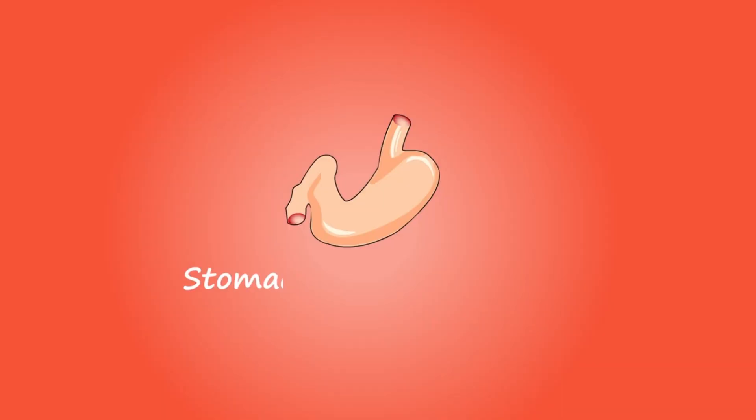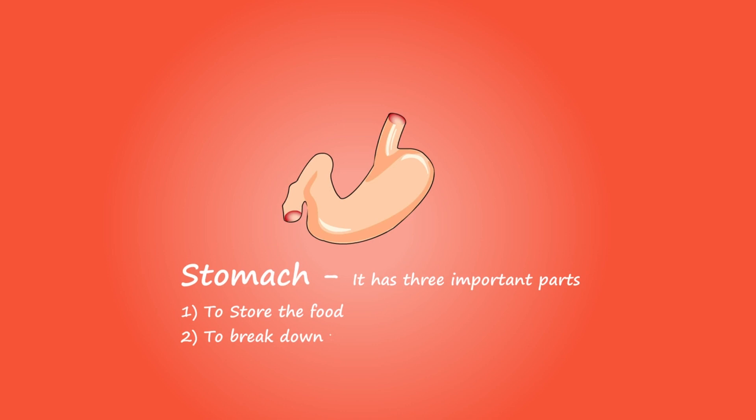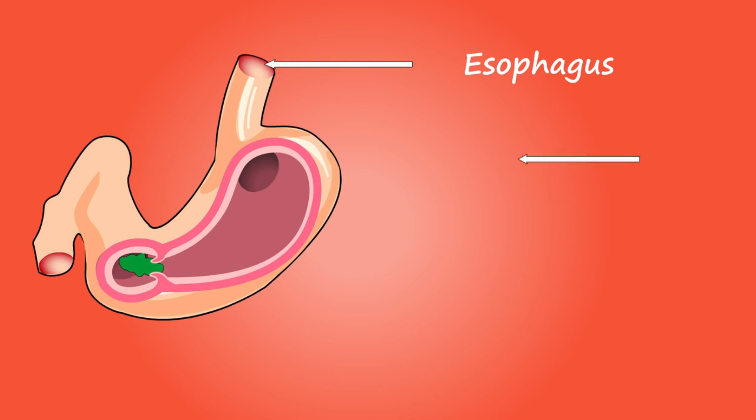Stomach. It is a muscular pouch-like structure in which food remains for almost 4 hours. The walls of the stomach secrete gastric juice, which contains hydrochloric acid that partially digests proteins.